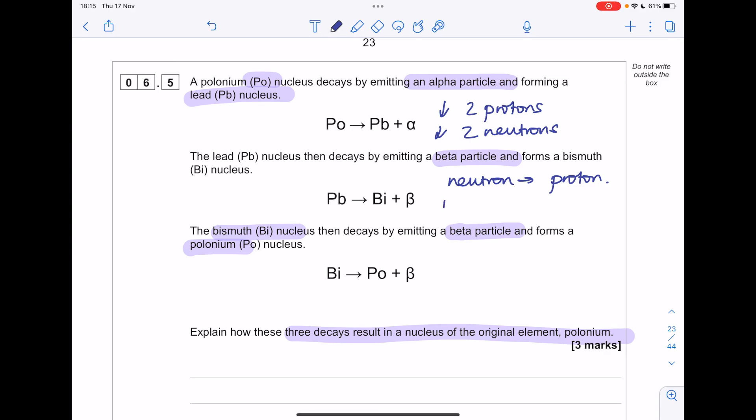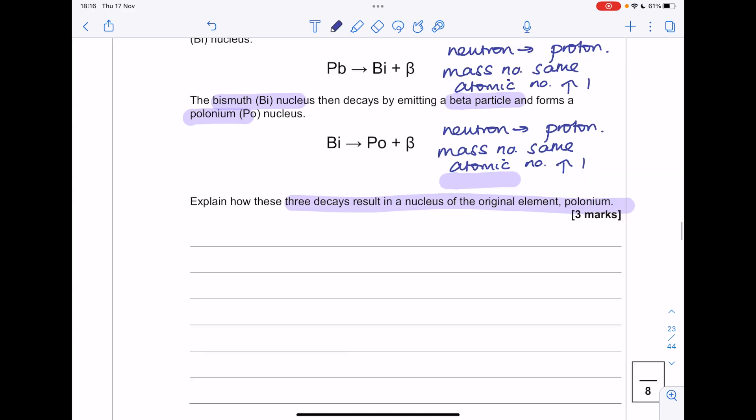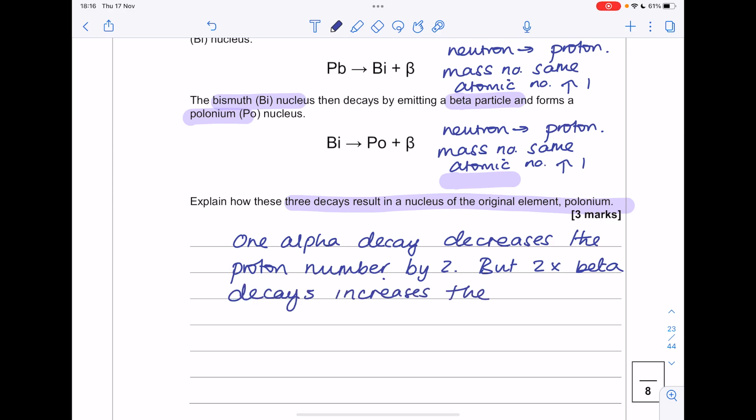At this point, the mass number stays the same. Whereas the atomic number increases by 1. And then the same is true here. If you actually look at what's going on, these steps cancel out the original step. So one alpha decay decreases the proton number by 2. But two beta decays increases the proton number by 2. Meaning that the atomic number stays the same as the original element.